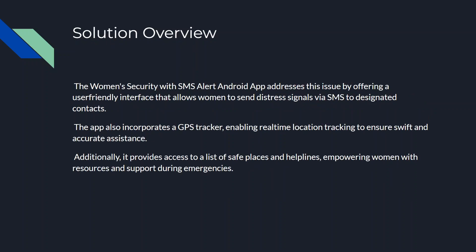The solution we are providing is a women's security app with SMS alerts. This Android app addresses the issue by offering a user-friendly interface that allows women to send distress signals via SMS. The app also incorporates GPS tracking, enabling real-time location tracking to ensure swift and accurate assistance. Additionally, it provides access to a list of safe places and helplines, empowering women with resources and support during emergencies.